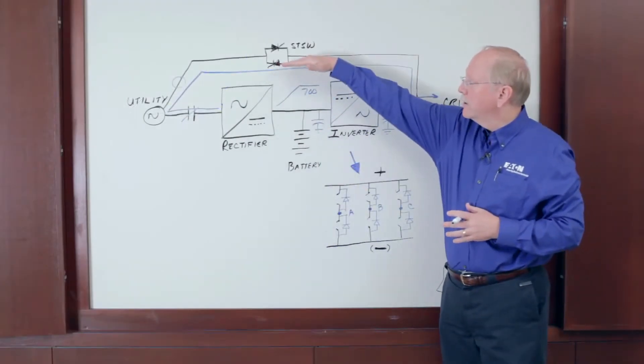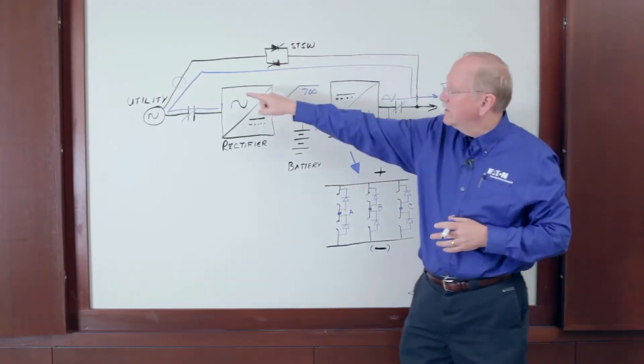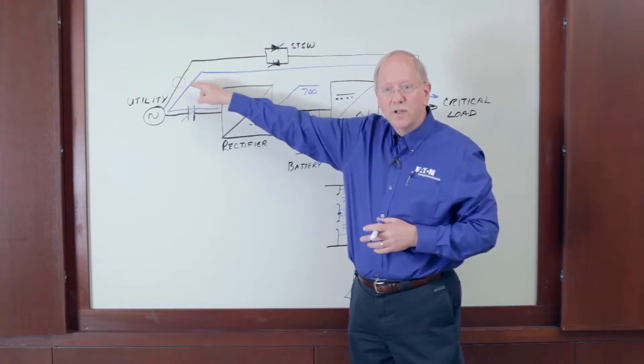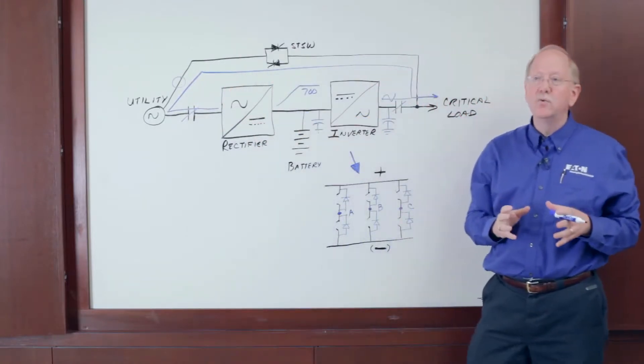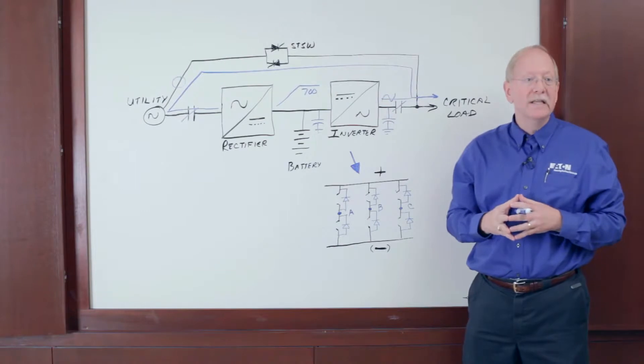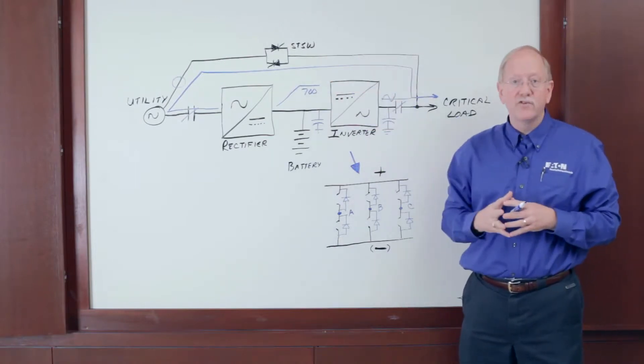So in Eco mode, I'll have power through the static switch. If the incoming power becomes disturbed, I can flash on the rectifier and the inverter, and I can do that in as little as two milliseconds, including turning off the static switch.